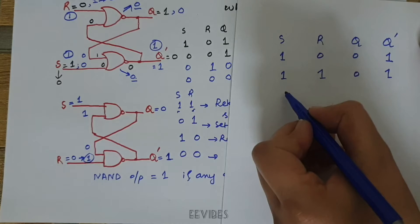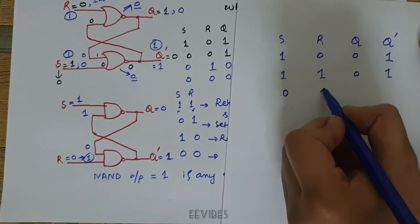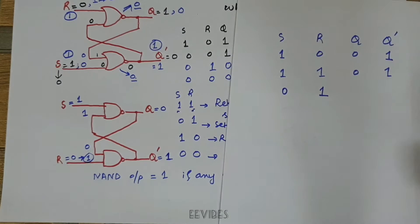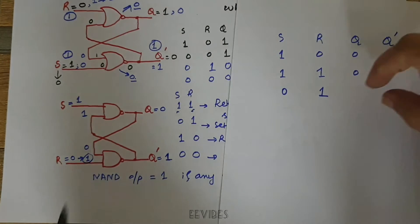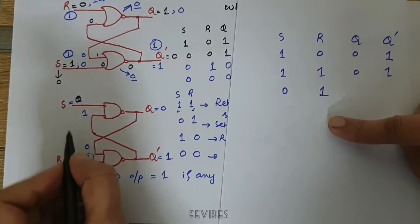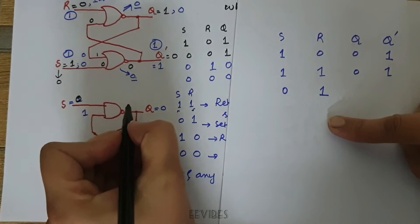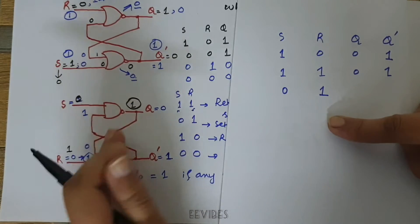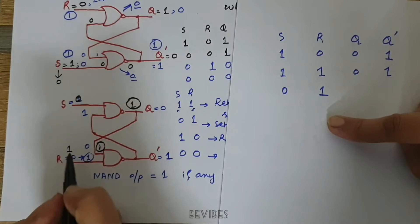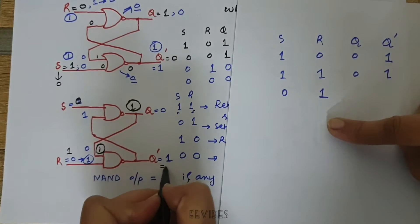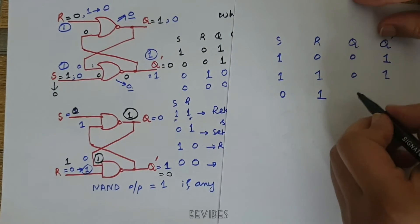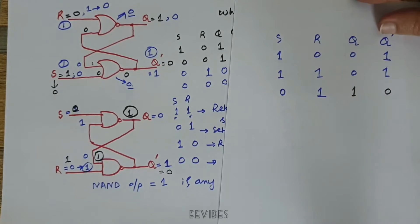Now let's make S=0 and R=1 and see how it will set the latch. When you make S=0 and R=1, this 0 input will force the NAND to produce output equal to 1, and this 1 is fed back into the lower NAND gate. The NAND of both inputs will produce output equal to 0, and you can see here the output is set to logic level 1 and Q bar is equal to 0.